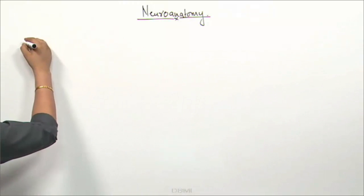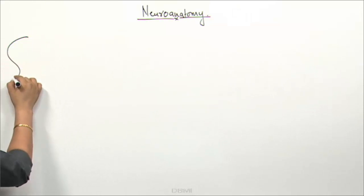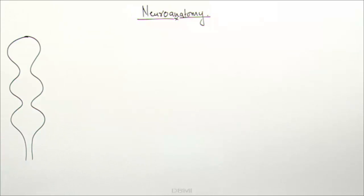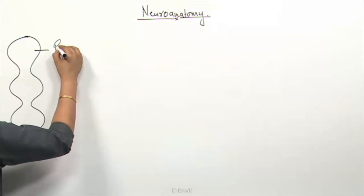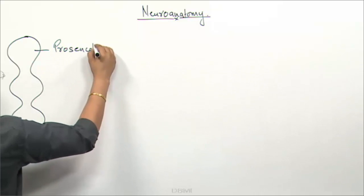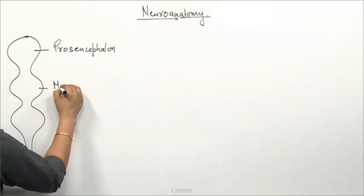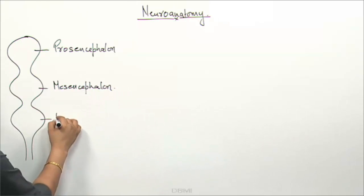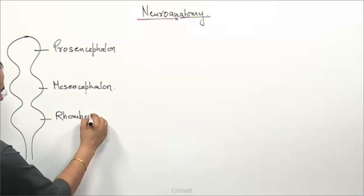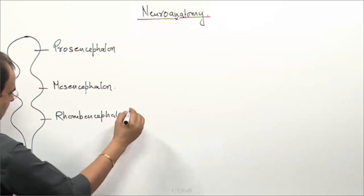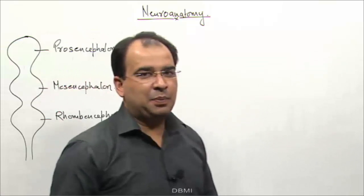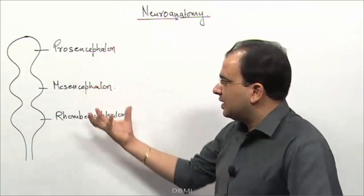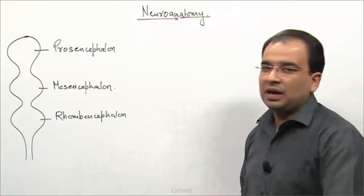So let us say we have these three primary brain vesicles here: the prosencephalon, mesencephalon, and rhombencephalon. You are looking at the cranial end of the neural tube, which is forming these three dilatations, which are called the prosencephalon, mesencephalon, and rhombencephalon.